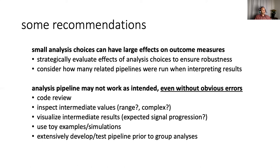So what you can do about that is code review is really helpful. If you work with somebody else and you can check each other's code and catch each other's mistakes, that's always helpful. Inspect intermediate values, especially if you're implementing processing steps for the first time. What is the range of values you're expecting? You're getting complex numbers in return. Is this even what you should have? Somewhat related, visualize intermediate results. Do the signals progress across time the way you expect them to?